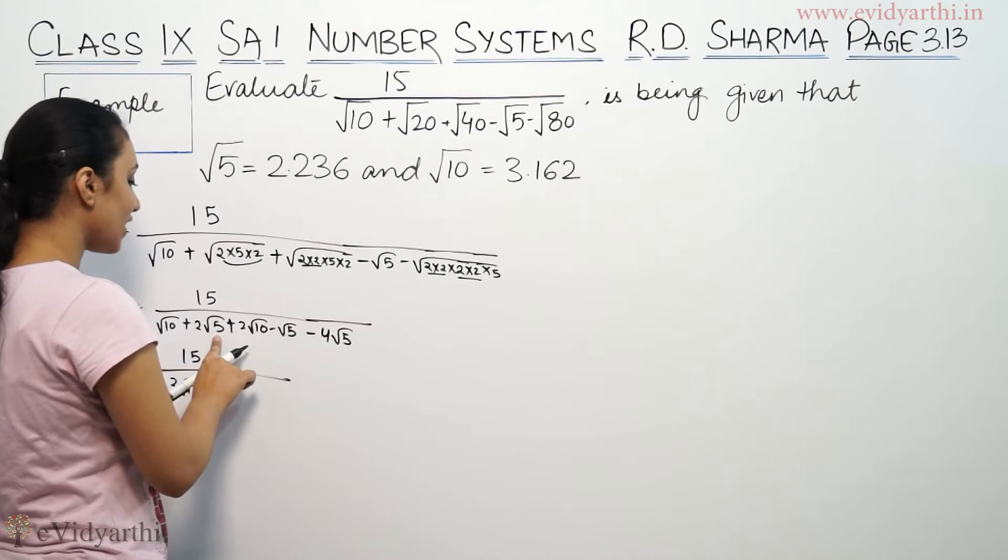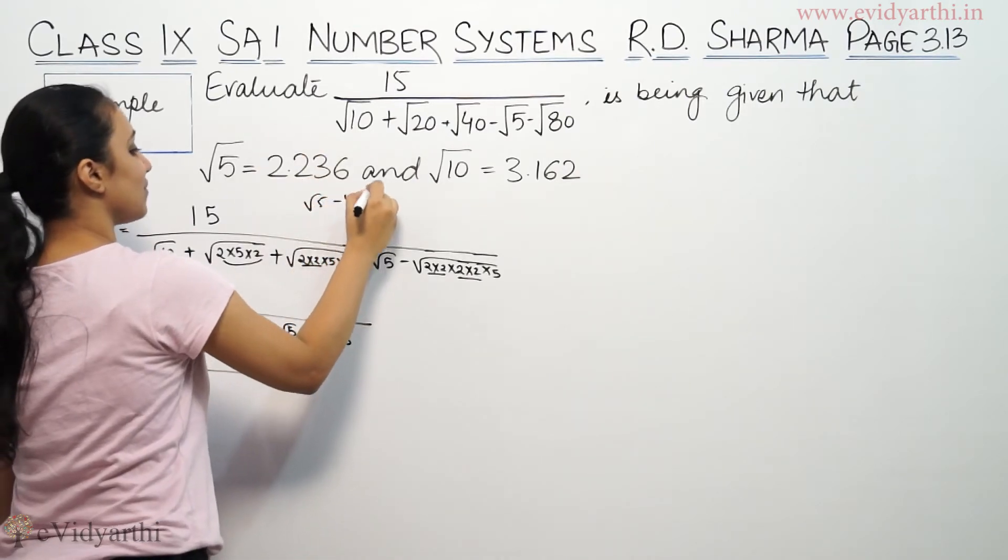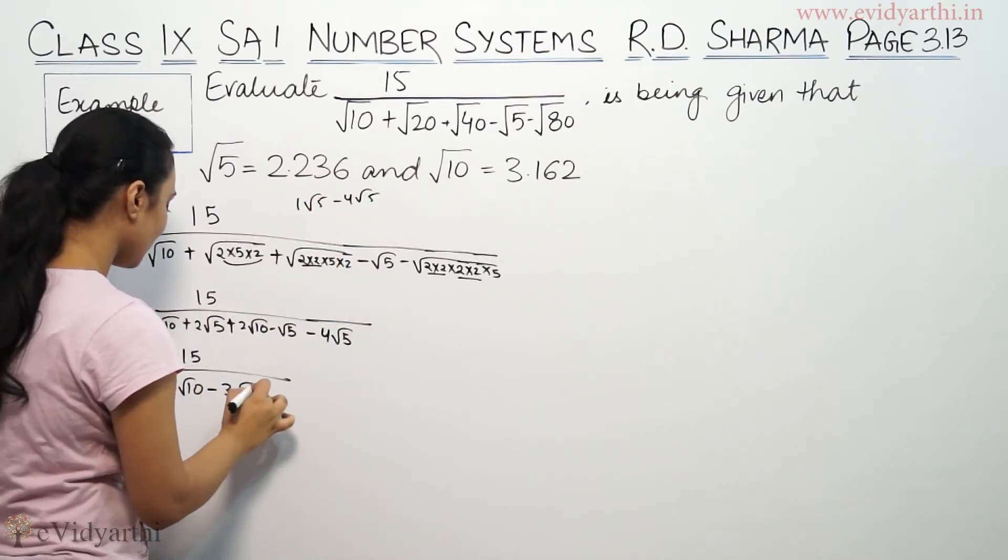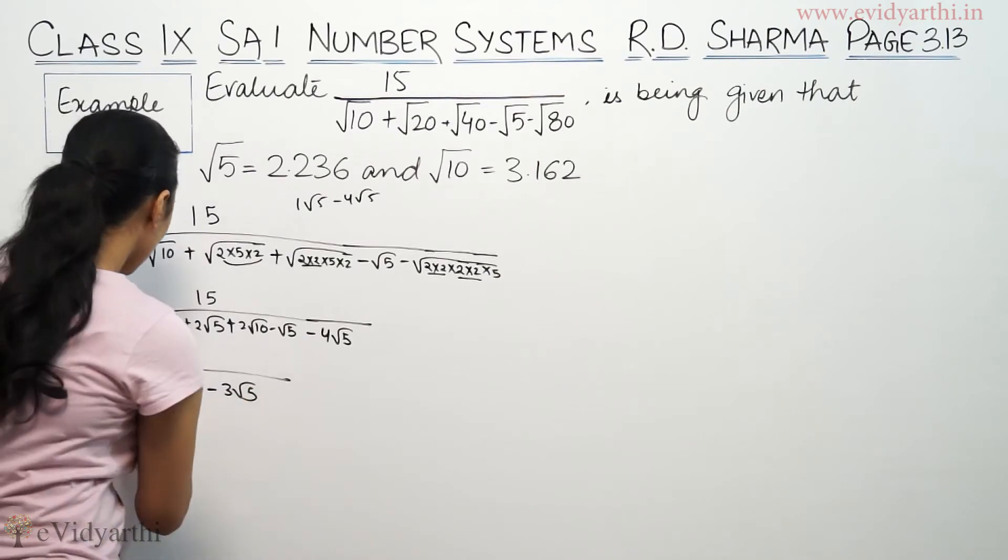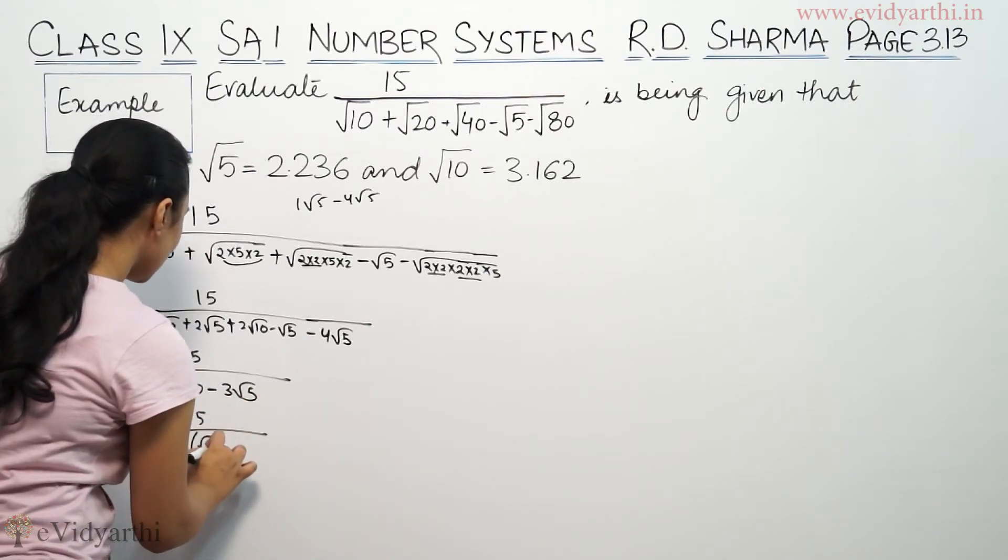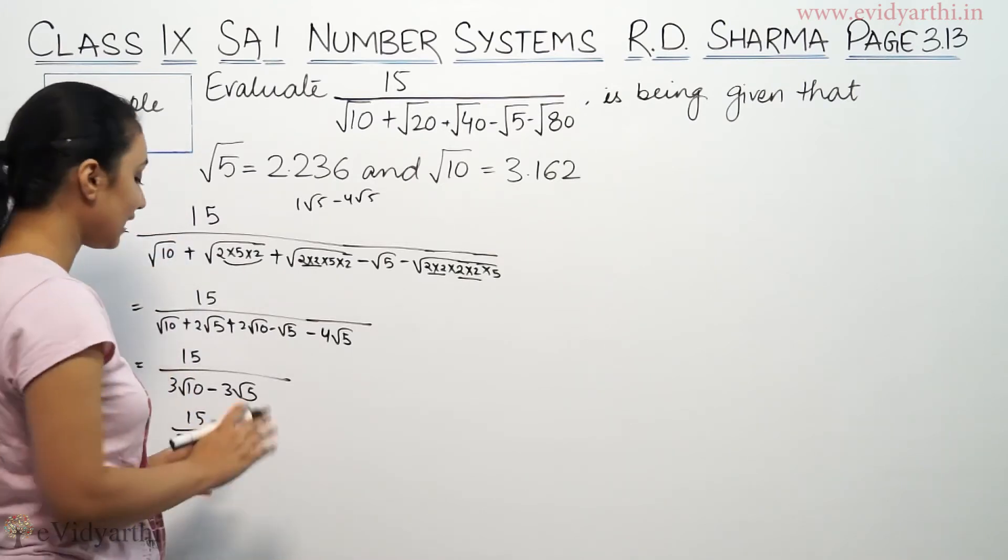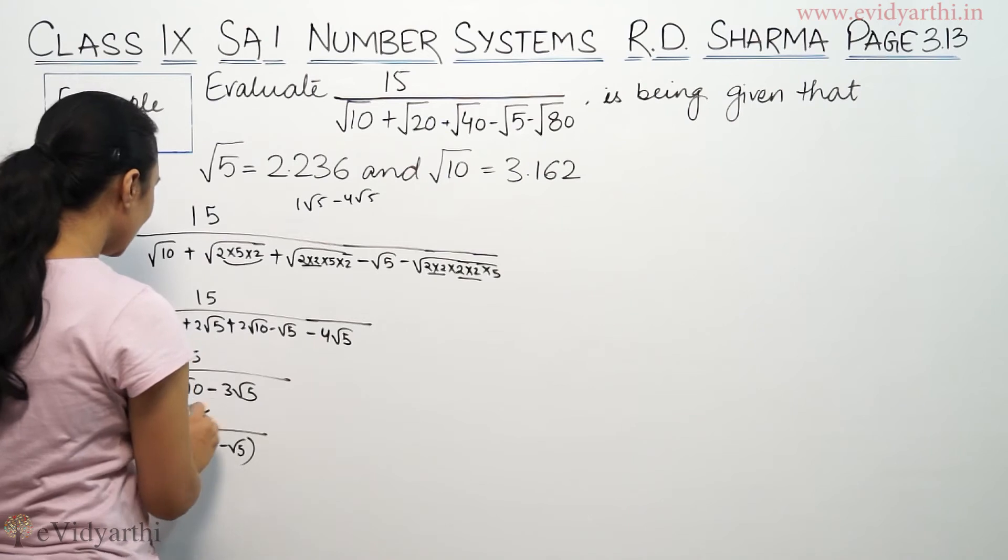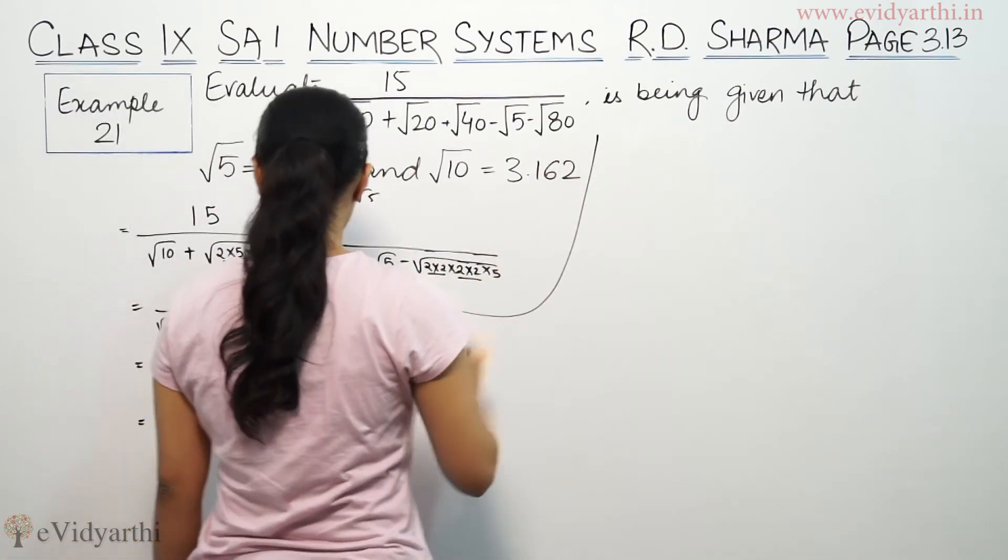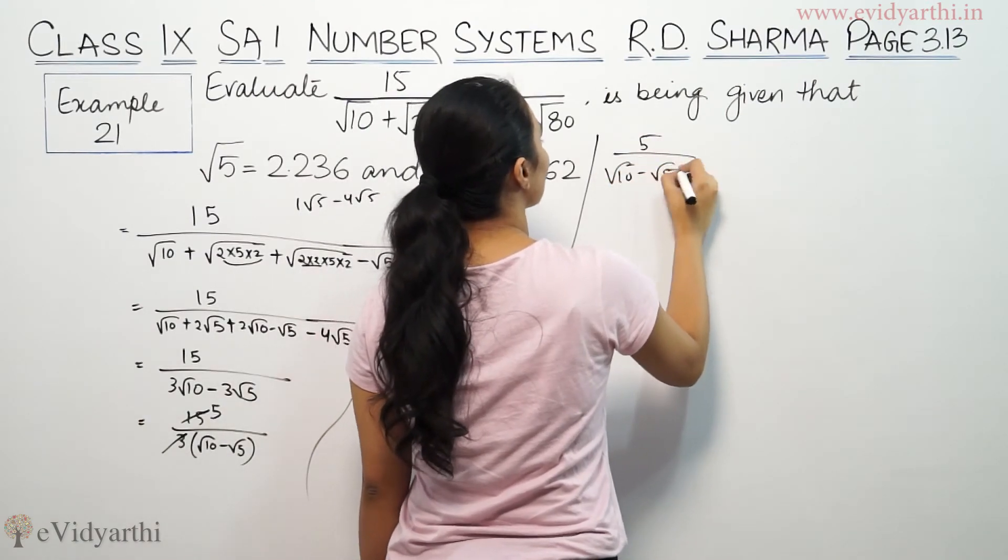So 2 root 5 minus root 5 minus 4 root 5 gives us negative 3 root 5. This becomes 15 upon 3 root 10 minus 3 root 5, which simplifies to 5 upon root 10 minus root 5. Now we need to rationalize the denominator.